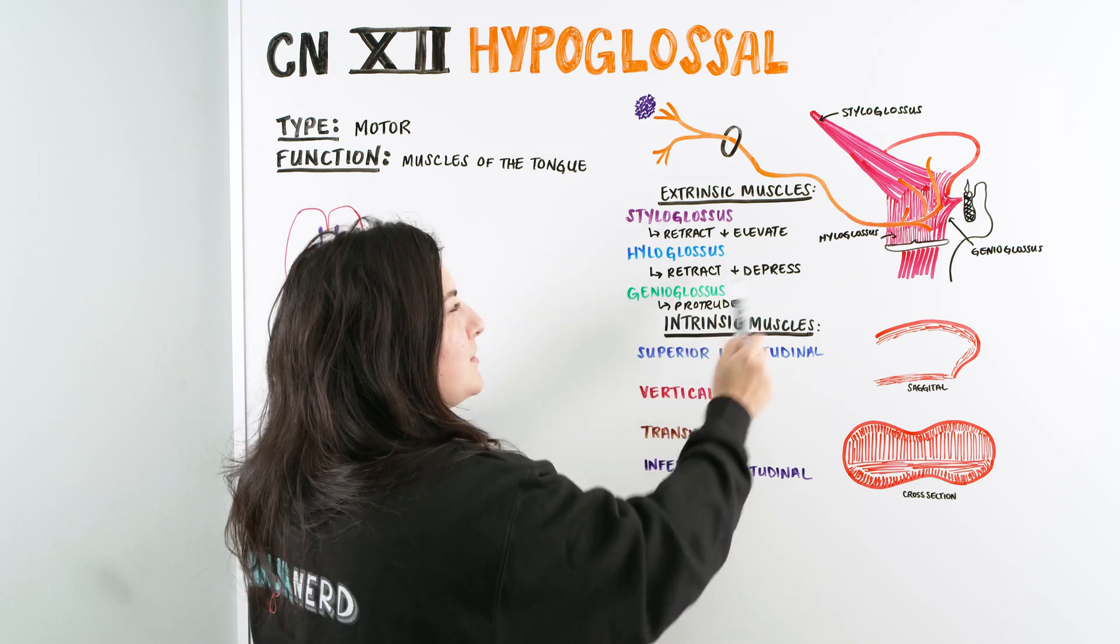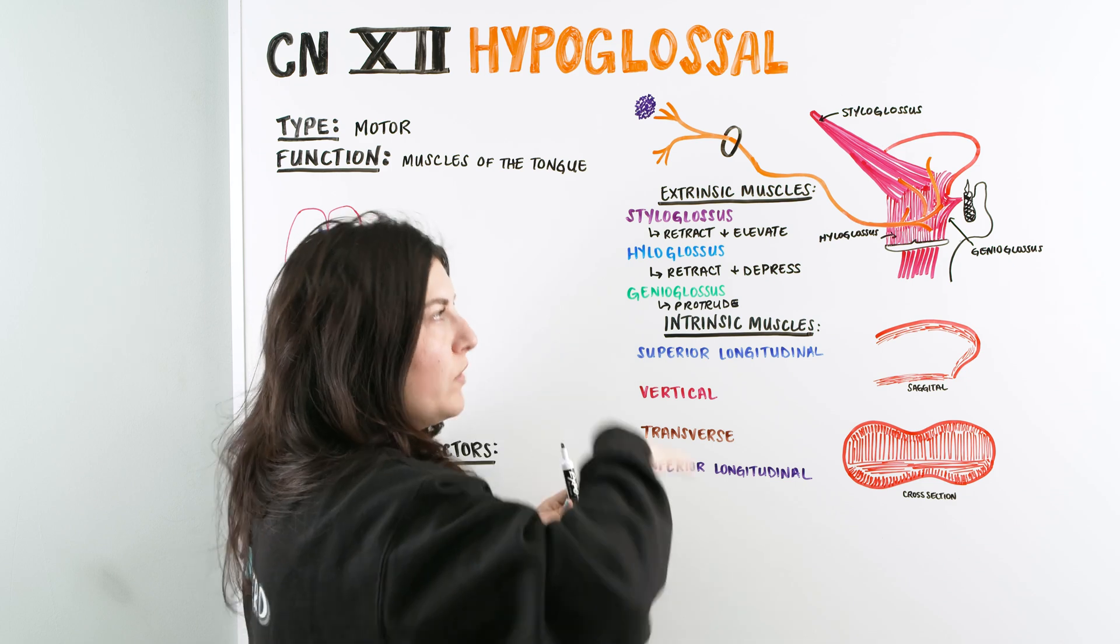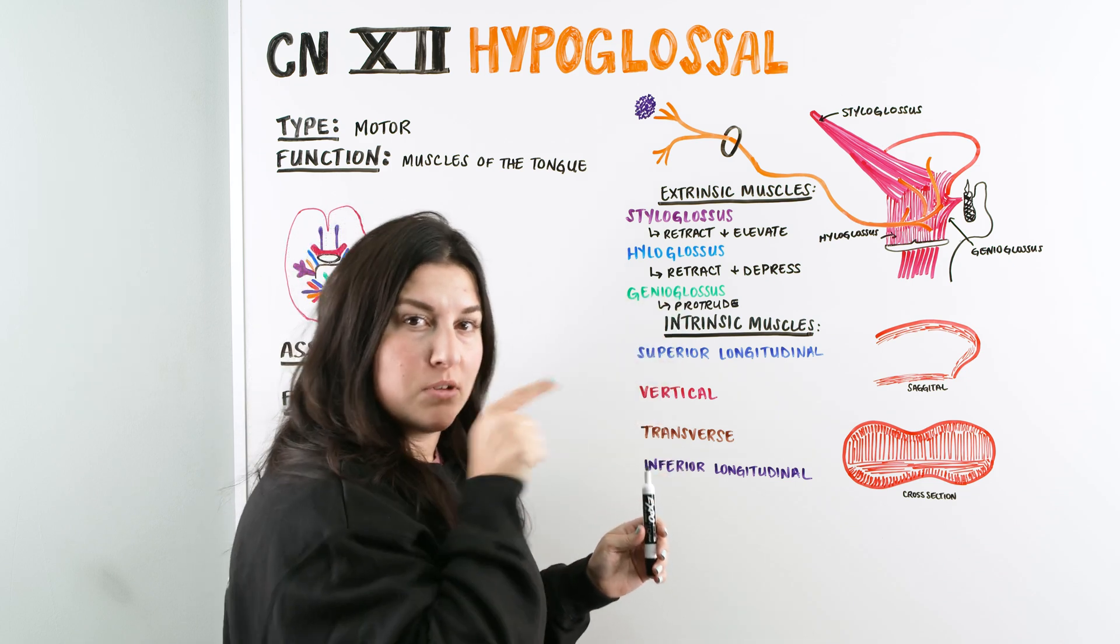Which, if it makes sense to me, it makes sense. Because if you look at the functions, right, we have some that are pulling the tongue back. One that's going to pull it up, one's going to pull it down, and one's going to help get it forward.